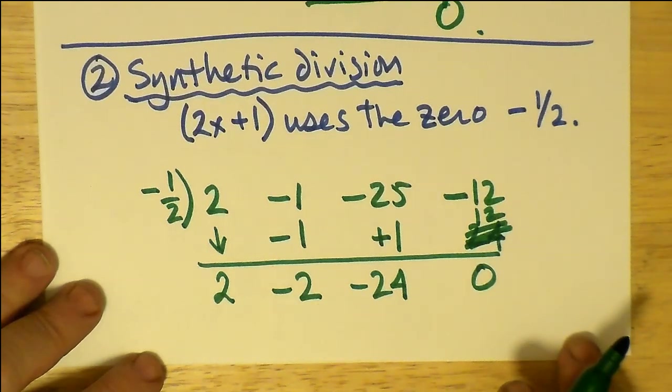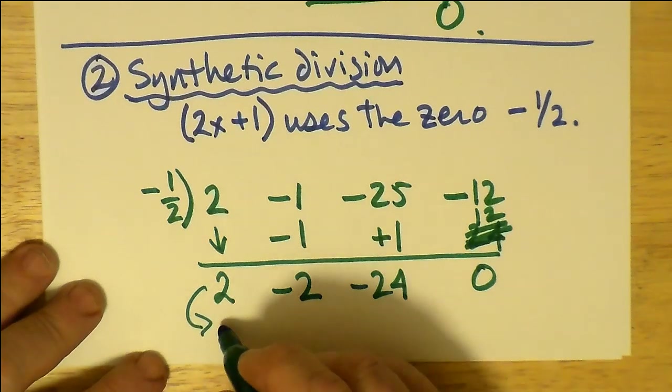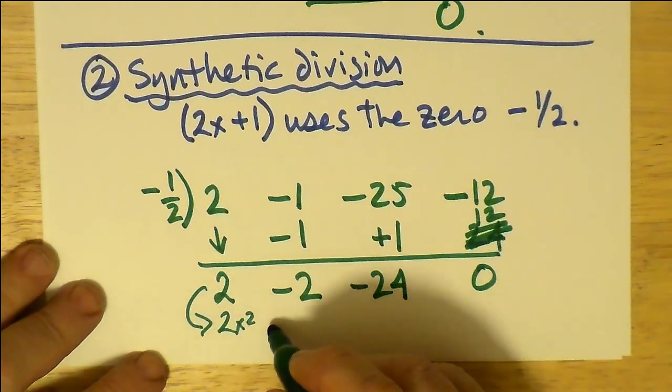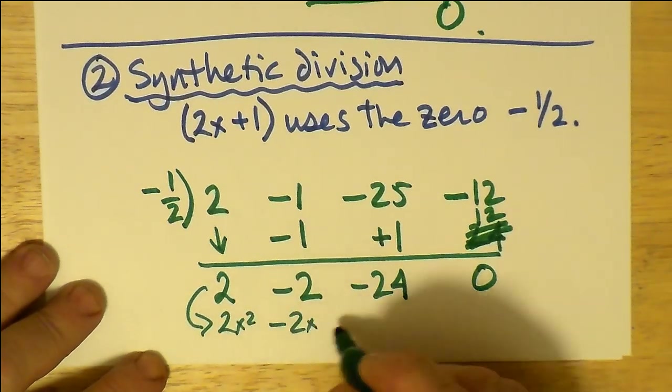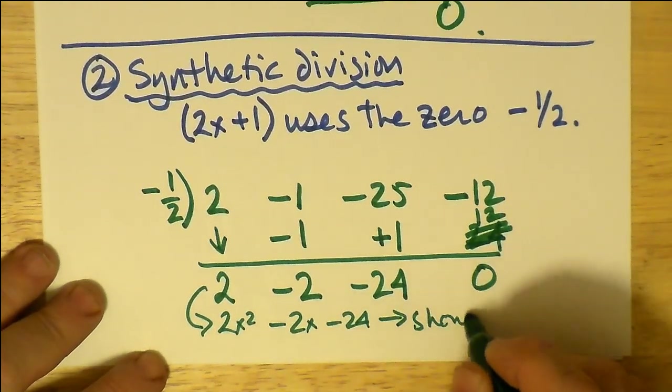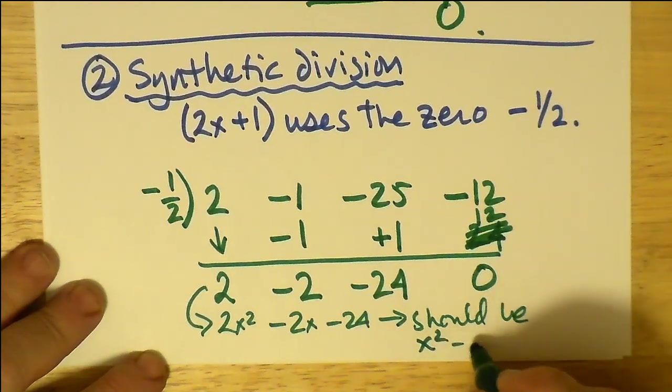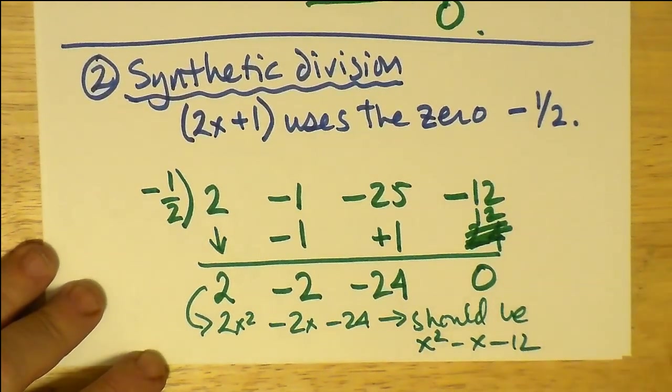Now, lo and behold, what are we getting here? This is 2x² - 2x - 24. Well, that's different from the result we got before. 2x² - 2x - 24 is actually exactly 2 times the correct factor. It should be x² - x - 12.